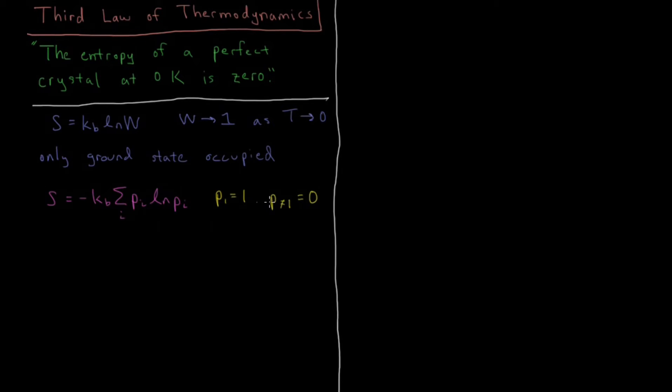So why might these probabilities all go to zero for everything except the ground state? Well let's define the energy of our ground state as zero and everything else is some value which is greater than zero.